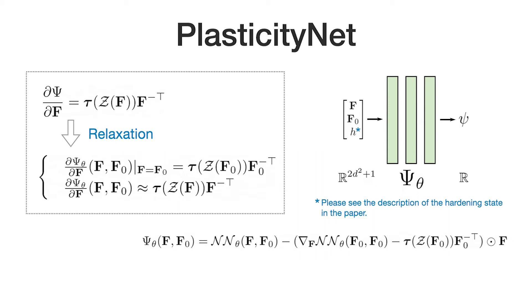The first equality requirement can be exactly enforced by a linear correction. We then train the neural network to approximate the second requirement.